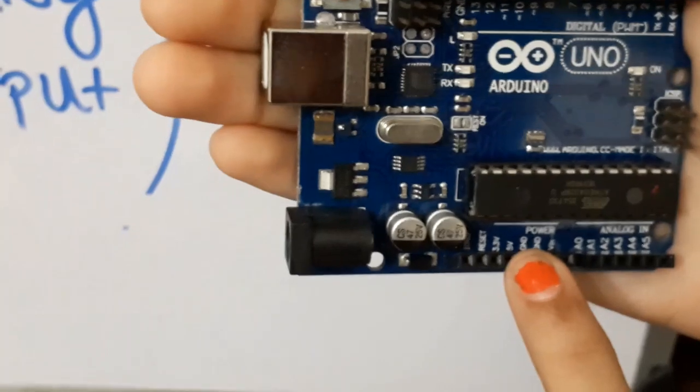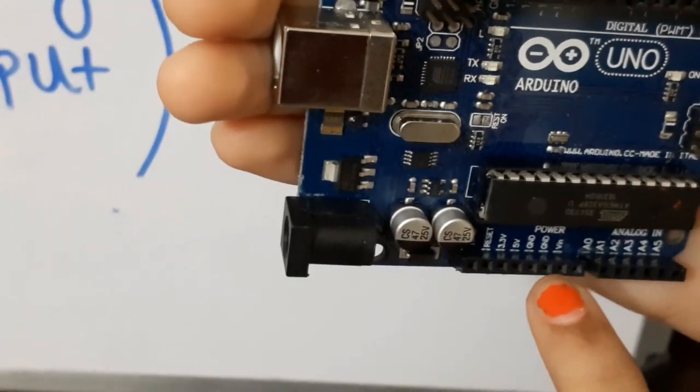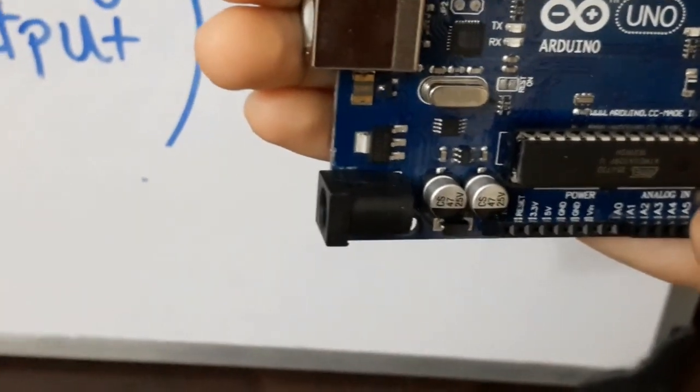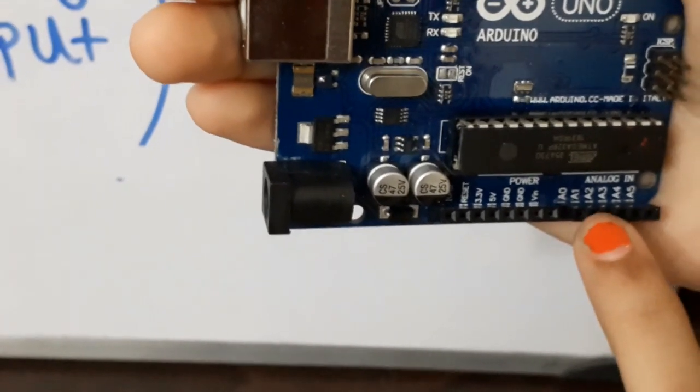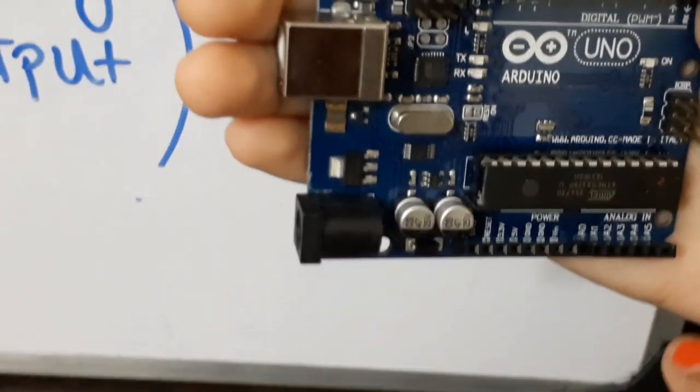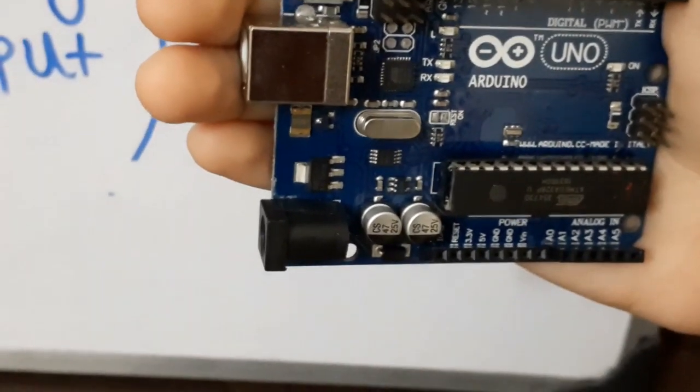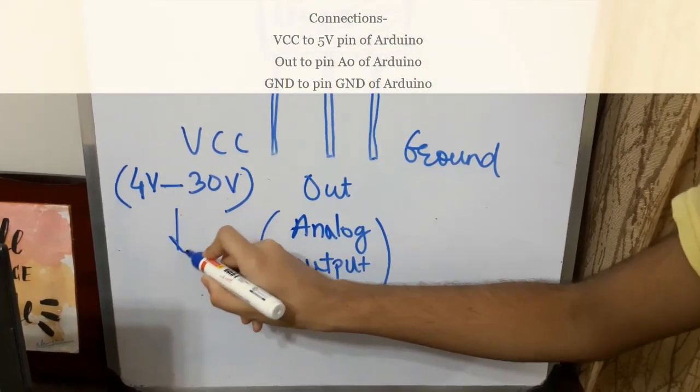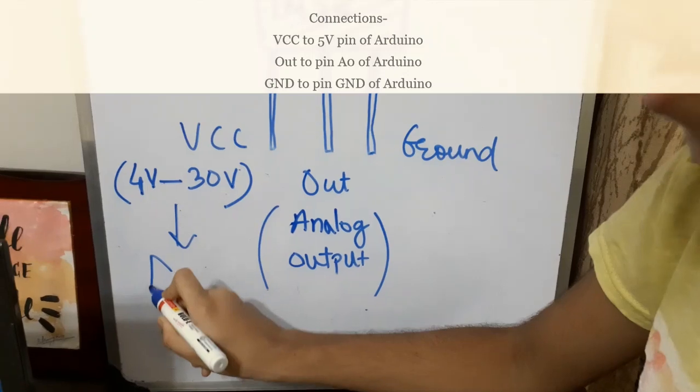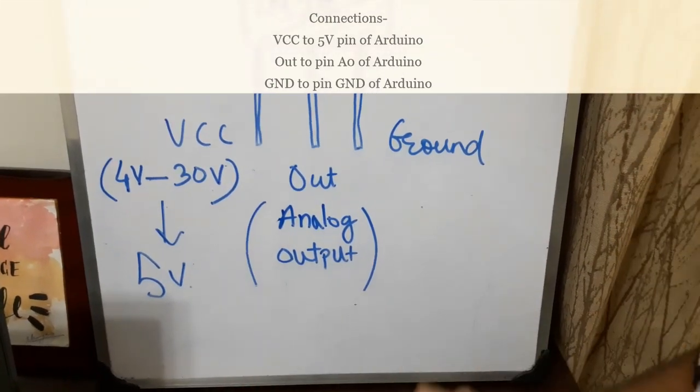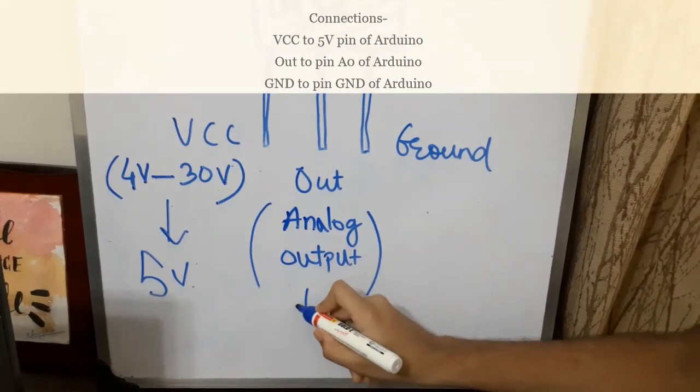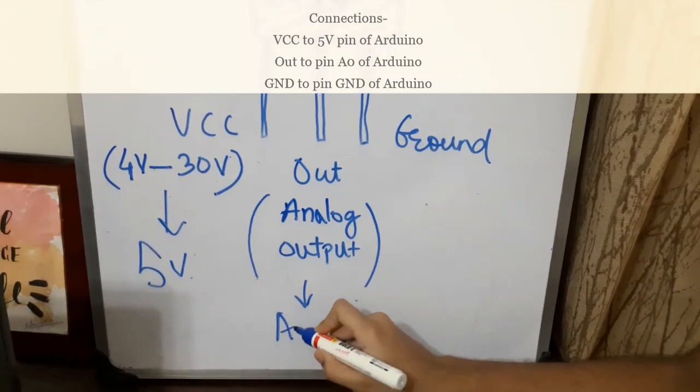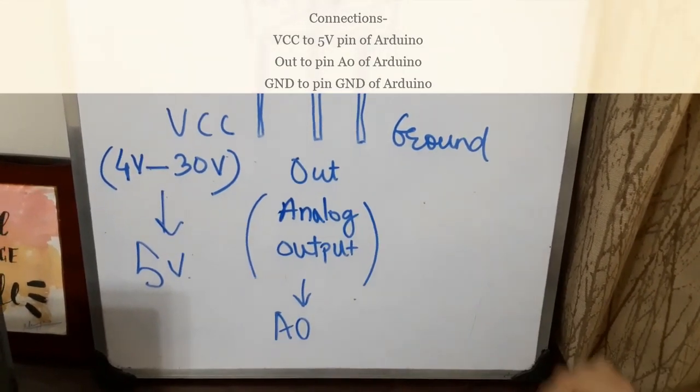In power pins, you can find 5 volts and ground. In analog, you have a set of pins from A0 to A5. But we have to connect to A0. As we have seen, we have to connect pin VCC to 5 volts.